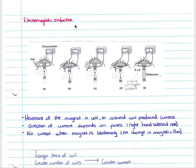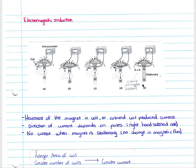Looking at electromagnetic induction: we have a wire or coil and a galvanometer measuring our current. The movement of the magnet in or around the coil produces a current. As we move a north-south pole magnet up towards the coil we produce a current; as we pull it away we produce a current; as we move it through the coil we cause another current; and as we move it away we cause a further current. However, when the magnet is stationary — simply held in between the coil — there is no current. There is no movement of field lines, and therefore no induction of current.